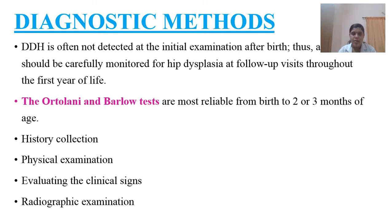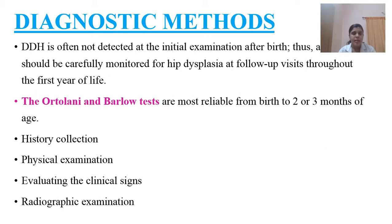DDH is relatively easy to diagnose as it is often clinically visible at birth. Initial examination following delivery should carefully monitor for signs of short hip, short femur, or abnormal leg positioning. If DDH is suspected, the Ortolani and Barlow tests are conducted. History collection, physical examination, evaluation of clinical signs, and radiographic examination provide a clear picture of the condition.